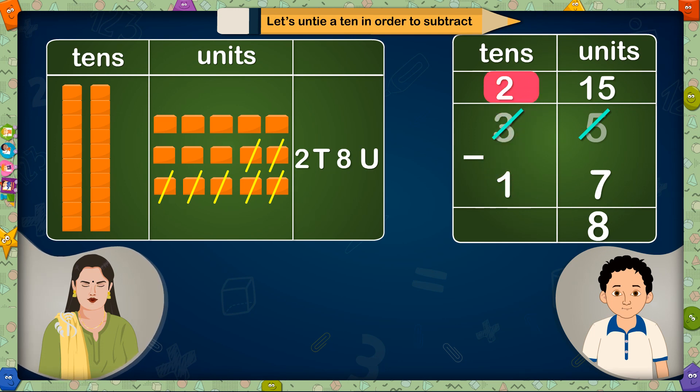And if we reduce 1 ten from 2 tens, 1 ten will be left. So 35 minus 17 equals 18.